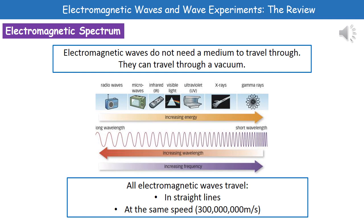Welcome to our review on electromagnetic waves and wave experiments. First thing we're going to look at is the electromagnetic spectrum. One thing we need to remember is that when considering any electromagnetic wave, they do not need a medium to travel through. This means they can travel through a vacuum, i.e. space. So what we've got in that diagram in the middle is the electromagnetic spectrum, and you do need to remember the order of those different waves.